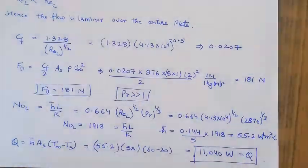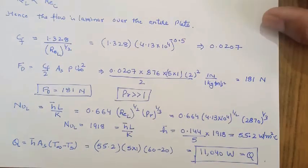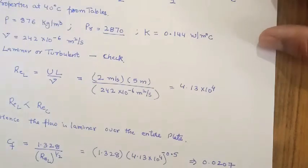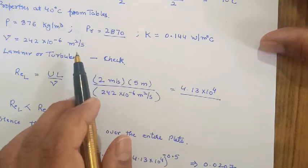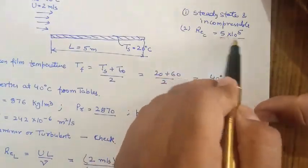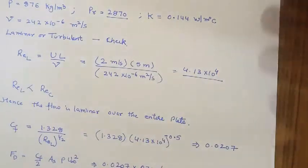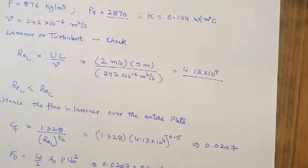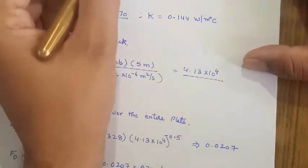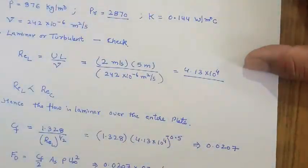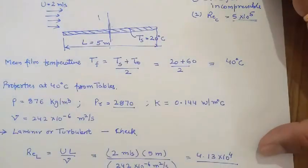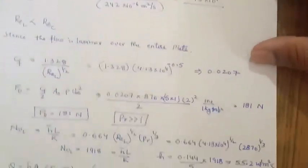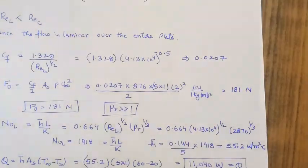This is how we solve these numericals. If the Reynolds number had been greater than the critical value, the flow would be laminar followed by turbulent. In that case, we would need the combined correlation for turbulent flow to solve the problem.